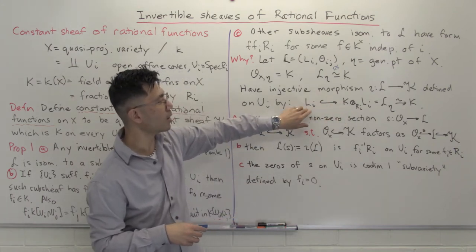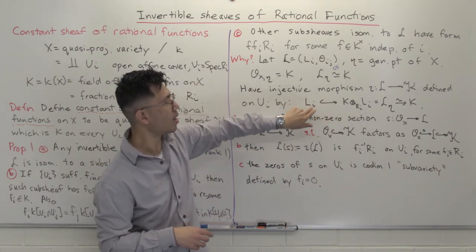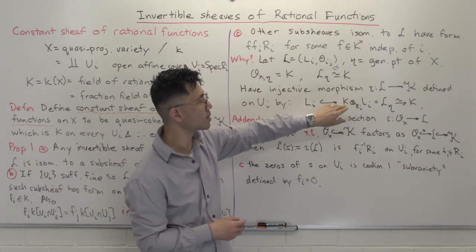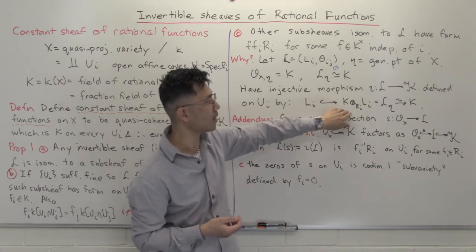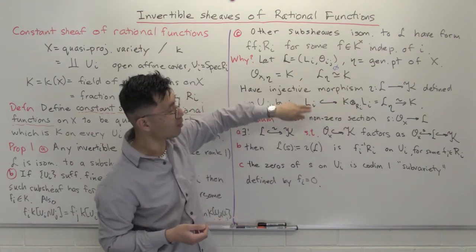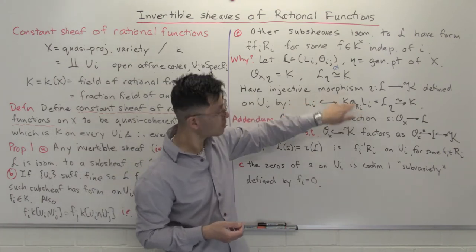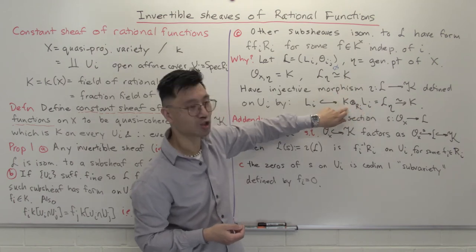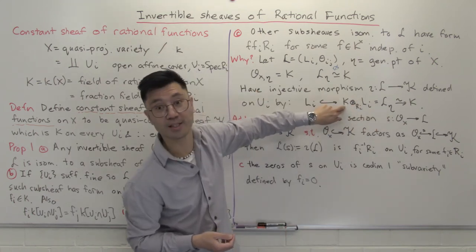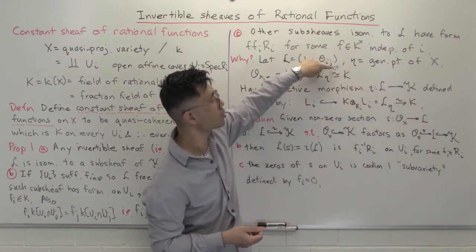To define ι, I just need to give you a map on each U_i which is compatible with descent data. On L_i, this will be a map of R_i modules. Whenever you have an R_i module like L_i, you can map it to its localization k ⊗_{R_i} L_i. In this case it's going to be injective because L is free of rank one. This localization is another way of viewing the stalk of L at η, because we're tensoring over the fraction field k — so that's L_η. We then compose this map with our chosen isomorphism φ.